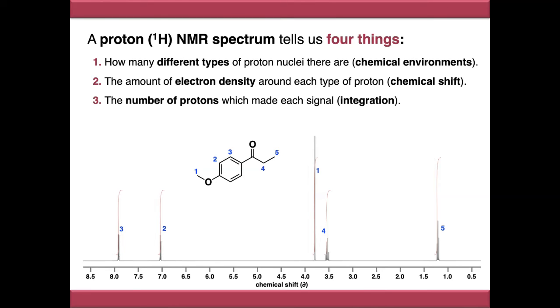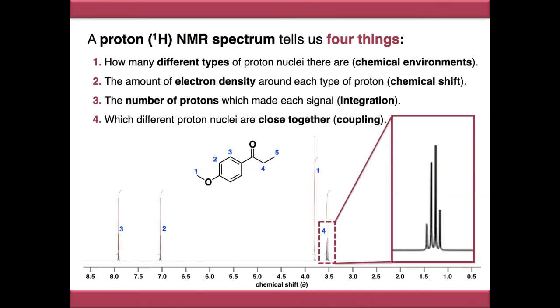The fourth piece of data that a proton NMR spectrum can tell us is which different proton nuclei are close together in the molecule and the effect that you'll see here is coupling and that's where the signal splits into multiple peaks. So if we look as an example at the signal for proton four if we zoom in we can see that this is made up of four peaks and this is called a quartet.